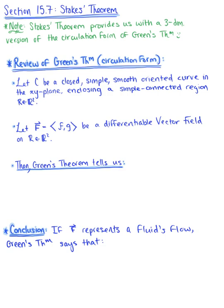Let's get started with a review of Green's Theorem in circulation form. We want to let C be a closed, simple, smooth, oriented curve in the xy-plane, enclosing a simple connected region R in R2. We also want to let F be a vector field that's differentiable in our region in R2. Green's Theorem tells us that the line integral over the closed curve C of the vector field dotted with the differential dR is equal to the double integral over that two-dimensional region R of the curl — so the partial derivative of G with respect to x minus the partial derivative of F with respect to y, dA.